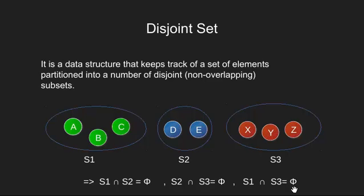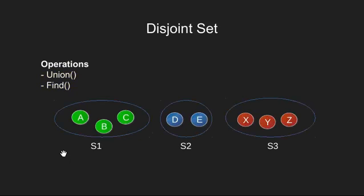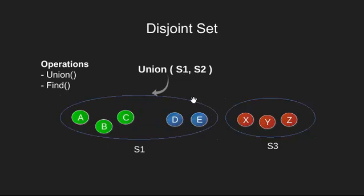So this disjoint set supports two operations. The first is the union operation and the other one is find operation. If we apply these operations on these three sets, the union operation will join two subsets into a single subset. Union of S1 and S2 will give us a set containing elements of set S1 and elements of set S2. Here you can see how the two sets have merged into one.